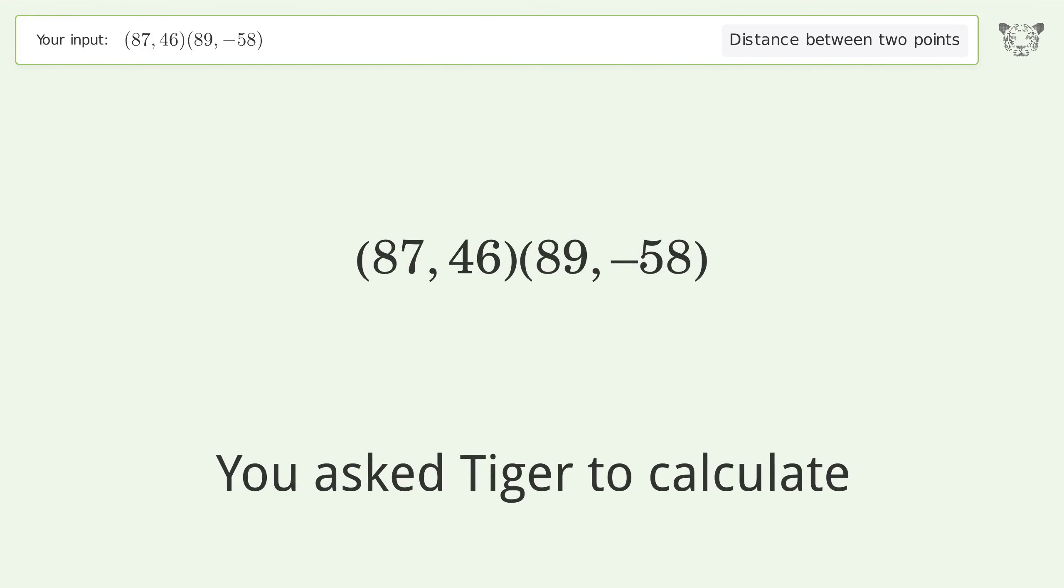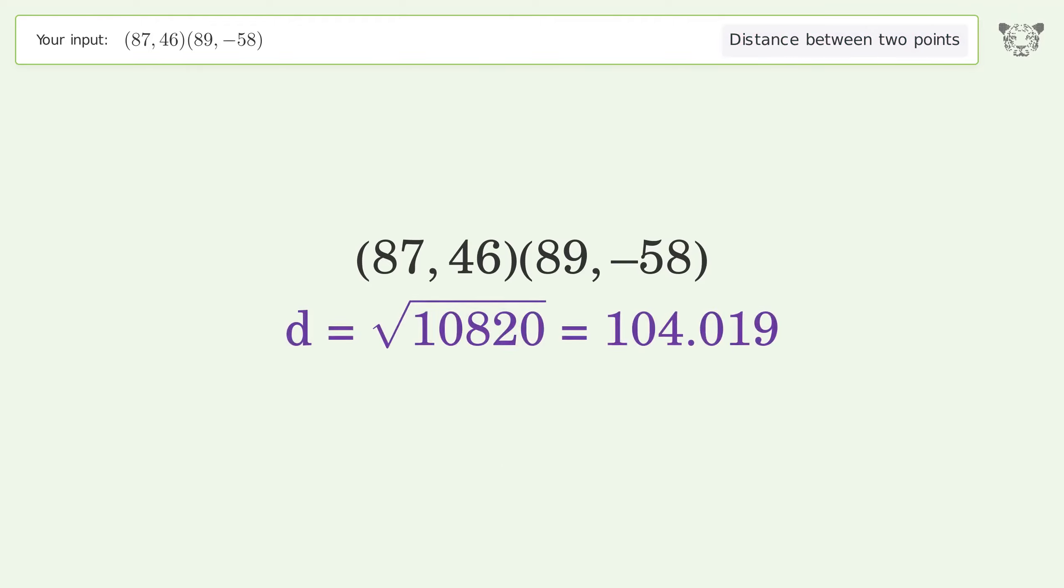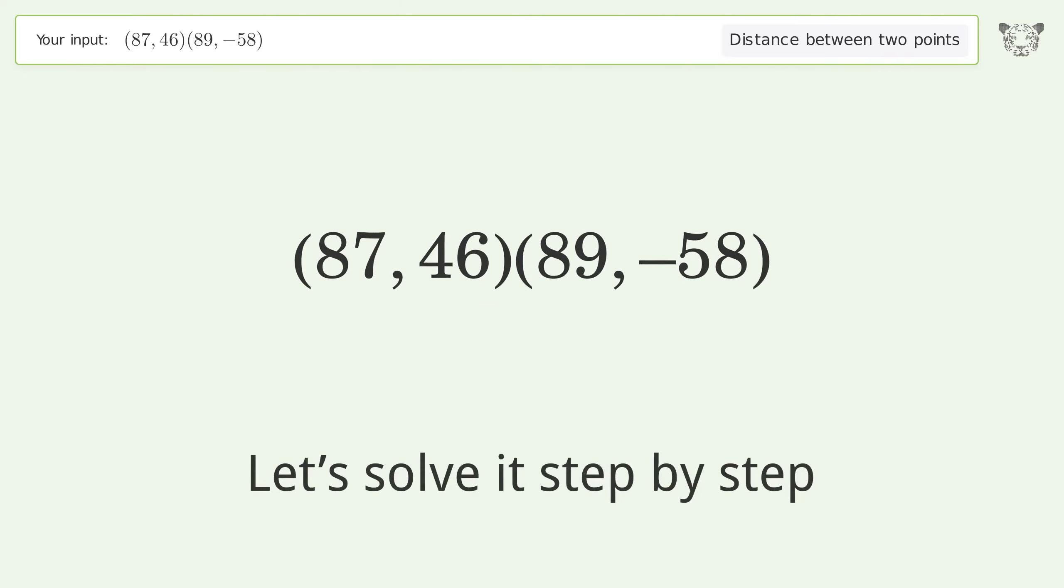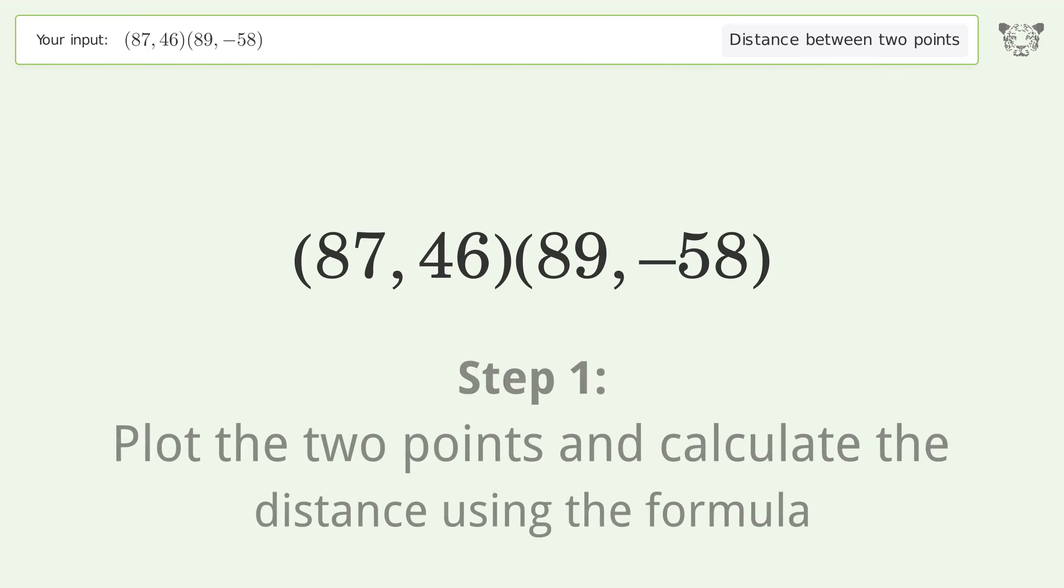You asked Tiger to calculate the distance between two points. The distance between the two points is the square root of 10820 or 104.019. Let's solve it step by step. Plot the two points and calculate the distance using the formula.